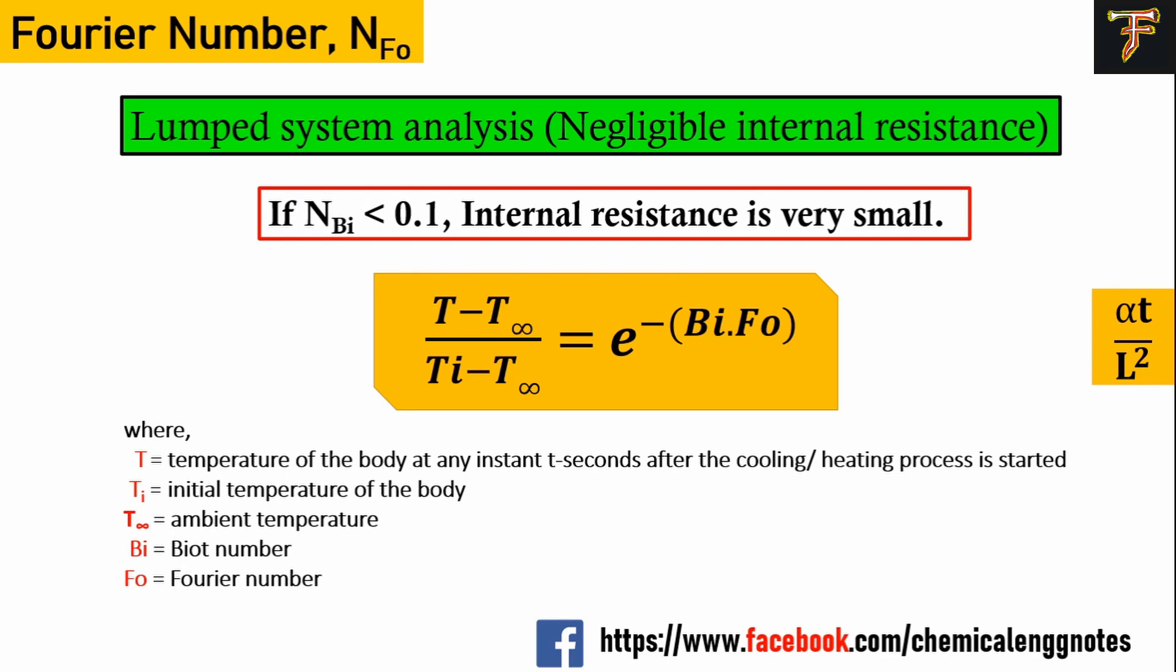This is because of the definition of Biot number, which is the resistance to internal heat flow divided by resistance to external heat flow. When Biot number is very less, there's no resistance, no temperature gradient within the body, and we consider temperature is uniform throughout. For more details about Biot number, you can access our channel.